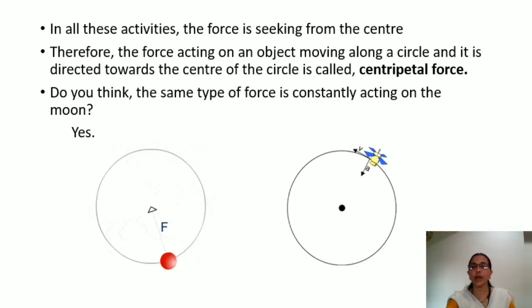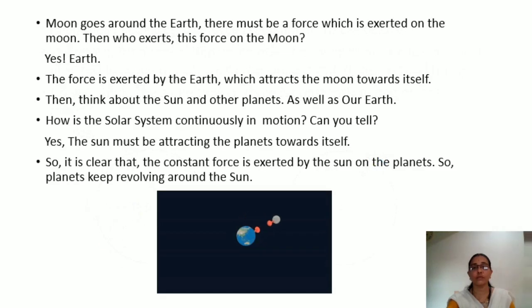Do you think the same type of force is constantly acting on the moon? Yes. You see the figure, the earth and the moon. Moon goes around the earth. There must be a force which is exerted on the moon. Then, who exerts this force on the moon? Yes. It's earth. The force is exerted by the earth which attracts the moon towards itself.